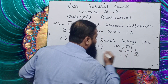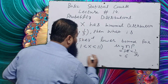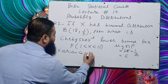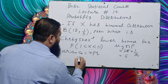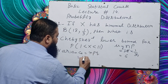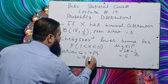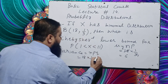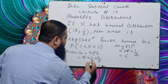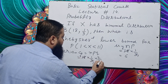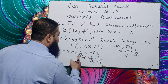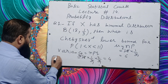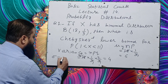Now find the variance. It is NPQ. Substitute the values: n = 18, multiplied by P = 1/3, and Q = 1 minus P, which is 2/3. Calculating: 3 into 18 gives 6, 3 into 2 gives 6, and 2 into 2 gives 4. So variance is 4, and the standard deviation will be the square root of 4, which is 2.